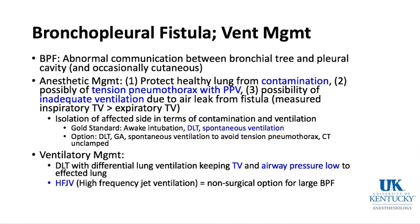With positive pressure ventilation, there is concern for tension pneumothorax. Air will follow the path of least resistance — down the lung with the bronchopleural fistula and out into the pleural space — potentially causing tension pneumothorax. Inadequate ventilation also occurs because inspired tidal volume is greater than expired tidal volume, with air leaking out through the fistula rather than entering the good lung.